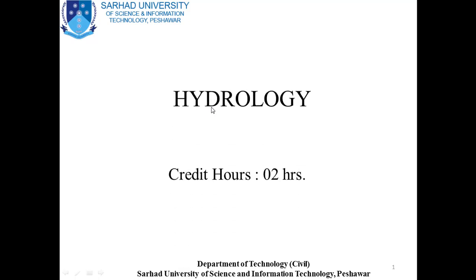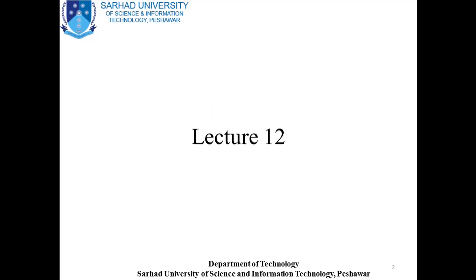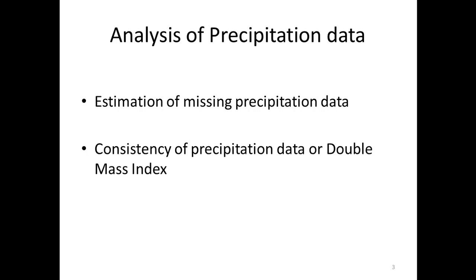Bismillahirrahmanirrahim. Assalamu alaikum. I hope you will be fine. Today we will have our lecture number 12. In lecture number 12 we will study about analysis of precipitation data. Analysis of precipitation data is done by two methods: number one is estimation of the missing precipitation data, and number two is the consistency of precipitation data or double mass curve method. So these two methods are used for the analysis of precipitation data.